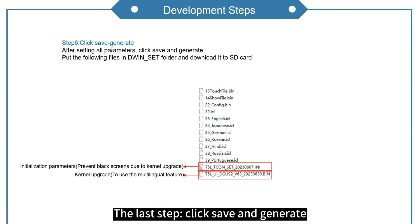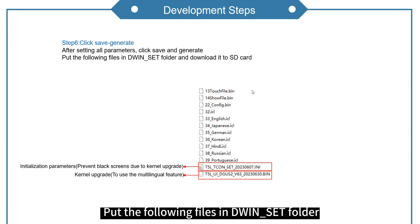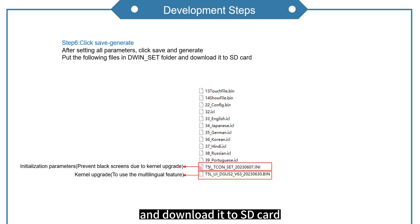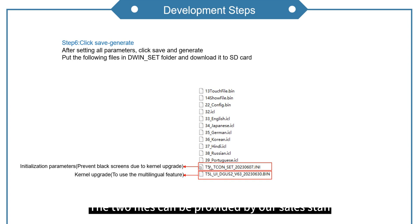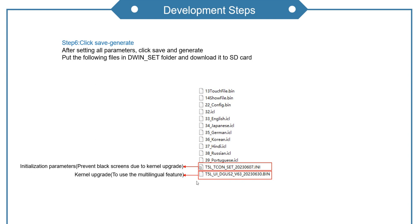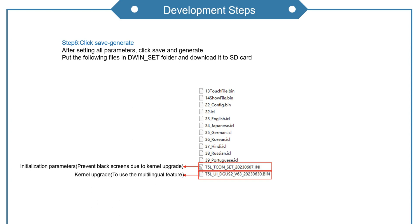The last step: click save and generate. Put the following files into an SCT folder and download it to the SD card. The two files can be provided by our sales staff — one is initialization parameters, and another is the kernel upgrade. That's all for what we explain.